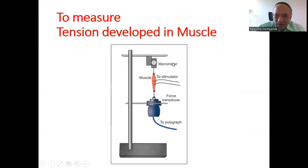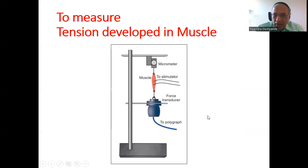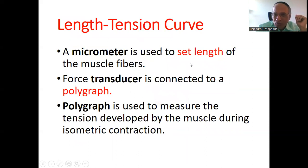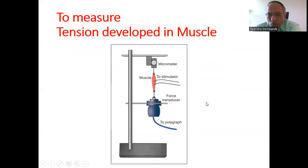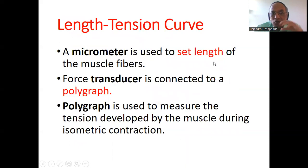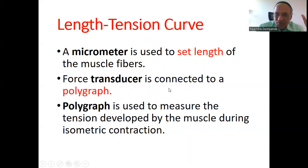Here you can see the experiment. This is the micrometer, this is the muscle, and electrical stimulation will be given at the neuromuscular junction. Then there is the force transducer and the polygraph, which plots the graph. The micrometer is used to set the length of the muscle. The force transducer is connected to the polygraph, which is used to measure the tension developed by the muscle during isometric contraction.